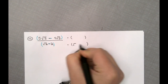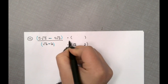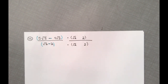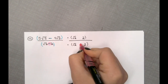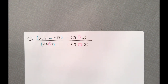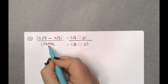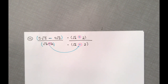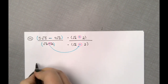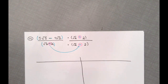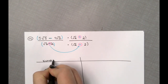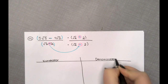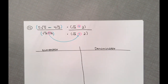The conjugate is when you take the binomial from your denominator, copy it down exactly, except you change the middle symbol to its opposite. I see a minus, so I'm writing a plus — both for top and bottom, because we have to multiply by the same thing. Before you start multiplying things out, I encourage you to separate this into your numerator and your denominator and work at each separately, then give your answer.